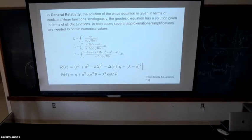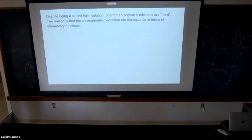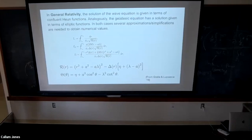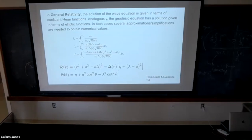The situation changes drastically in general relativity because the solution of the wave equation is given in terms of confluent Heun functions — a very complicated second-order differential equation. Even the geodesic equation, which is an approximation of this wave equation, still has a lot of complexity because you have to deal with elliptic function integrals. You have to consider approximations: the equatorial plane, the large-spin limit, the extremal case — various approximations that let you go deeper into the elliptic functions.